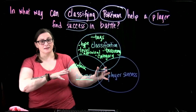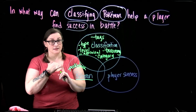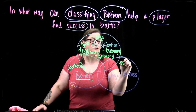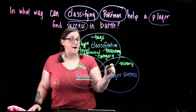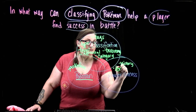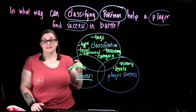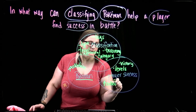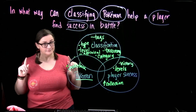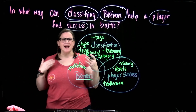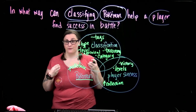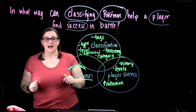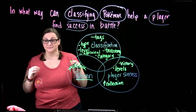Now, player success. What are things that might indicate player success? Well, victory. Player success is levels. Player success is increasing your Pokemon collection — increase collection. After all, don't we have to catch them all? As I'm going through each of these circles, what word have I said a lot? I have said 'or' a whole lot. That's going to be important.